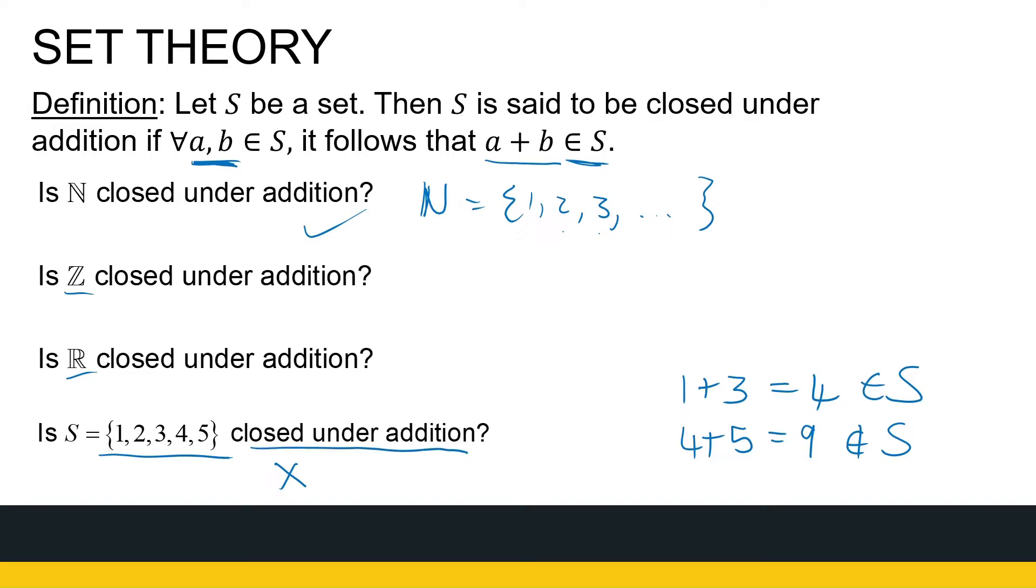Now, to show something is not closed under addition, if I've got the set S, I simply need one counterexample. To show that a set is closed under addition, I can't use one example. So we're going to look at a technique on how to show that a set is either closed or not closed. But to show that a set is closed takes a little bit more work.